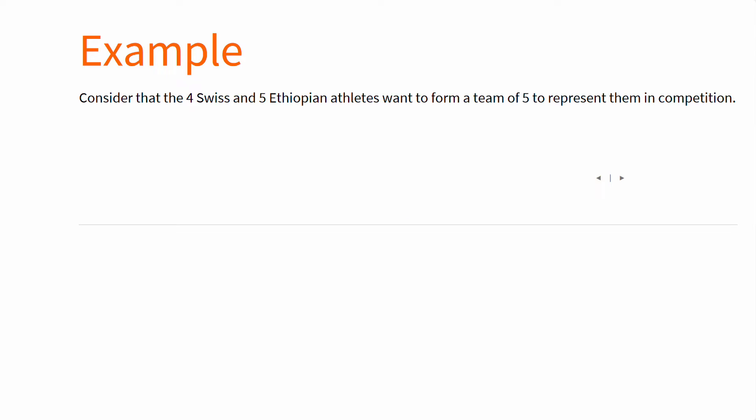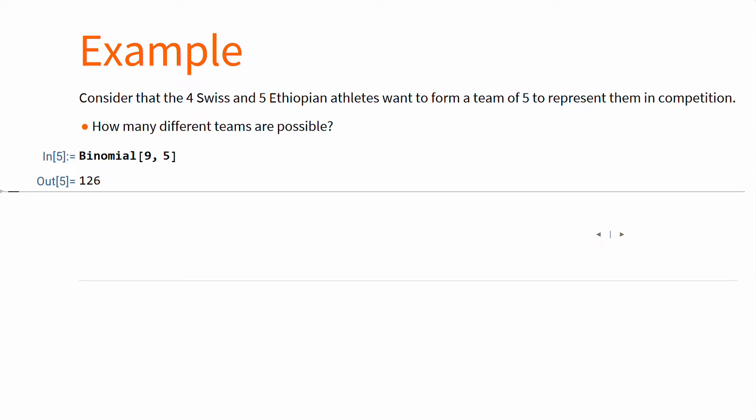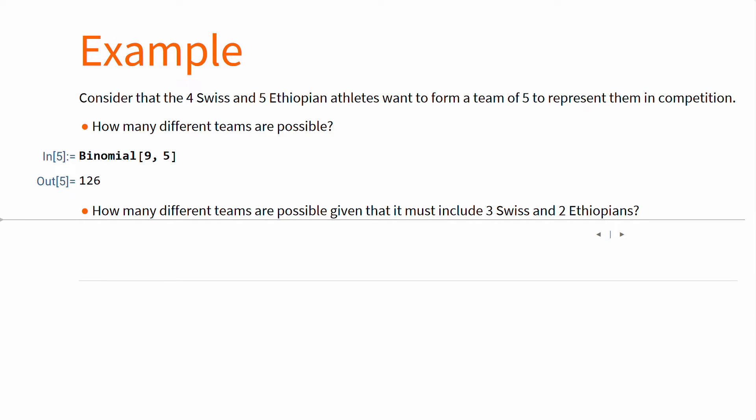Imagine the same athletes form a team of 5. The size of the total group is 9, but the team has a size of 5, so it's binomial 9-5. If you require 3 of them to be Swiss and 2 Ethiopians, then you end up with two binomial coefficients, as we saw with multiple simultaneous experiments.